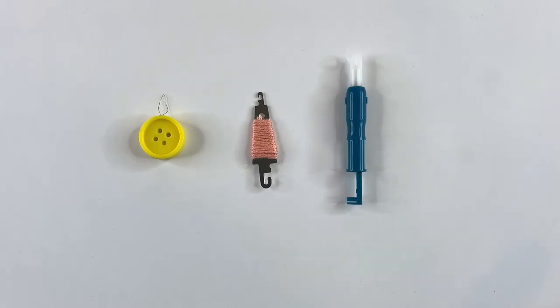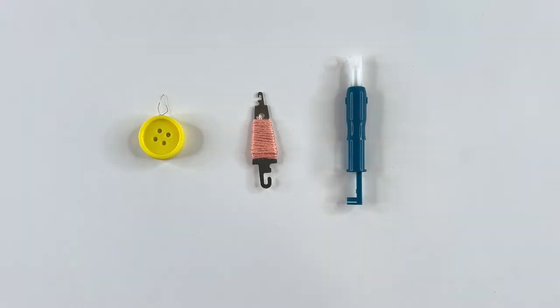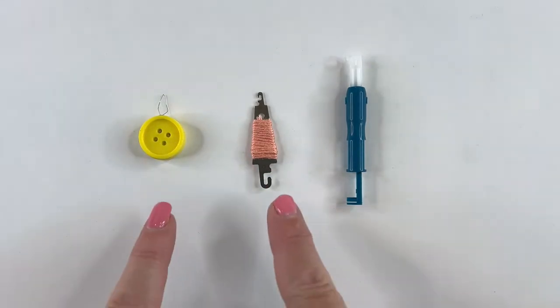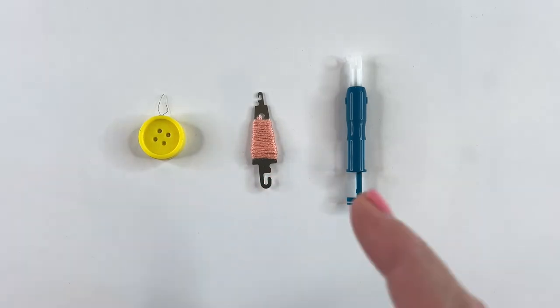So in the previous video, Needle Threader 101, we discussed the hook and the loop ways to thread a hand needle. Now, you can use these for your sewing machine if you could fit behind the sewing machine and if they fit the size of the eye of the needle that you have in your machine.